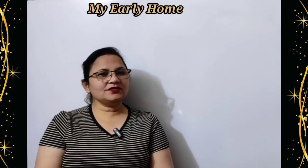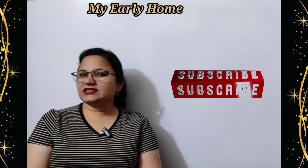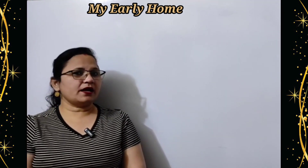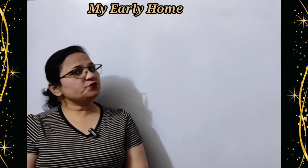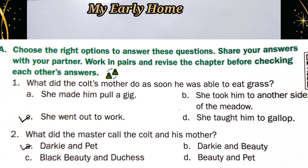Hello, good morning students. Welcome to my channel. Today in this class we are going to do question answers and exercises of chapter 'My Early Home' from your book Communicate with Cambridge. Let's start with Exercise A given on page number 18. Choose the right options to answer these questions. Share your answers with your partner. Work in pairs and revise the chapter before checking each other's answers. Let's do it.